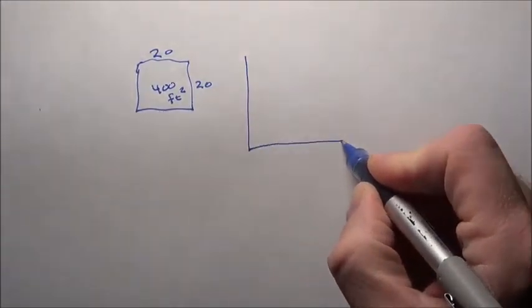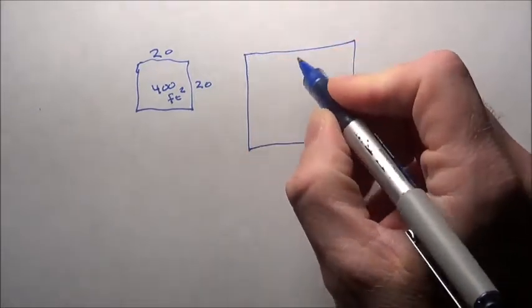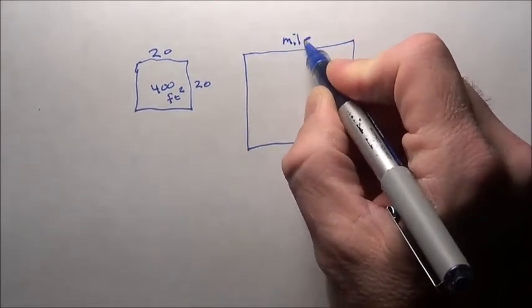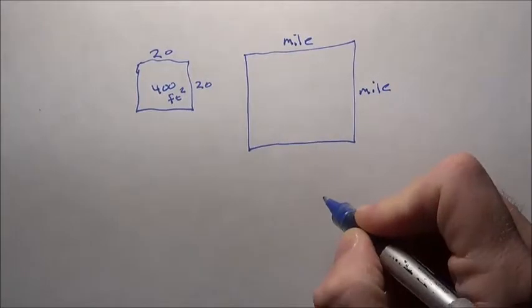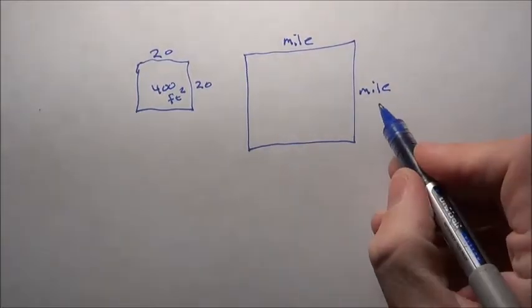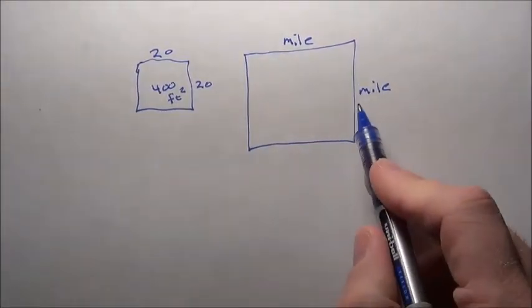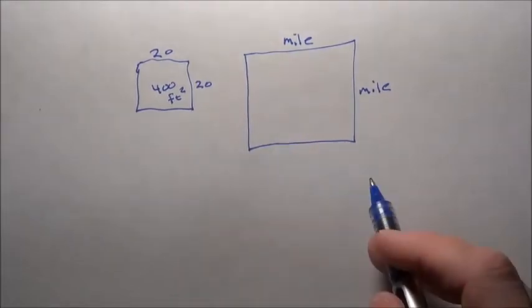The other key is it talks about a square mile. Now you have to think, that's a mile by a mile. That's a square mile, one square mile. This is in square feet. This is square miles. You need to get them in the same units.